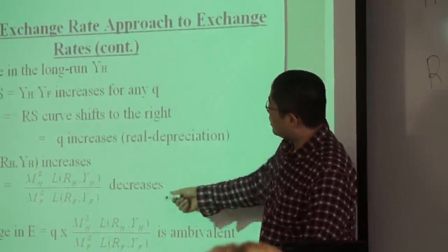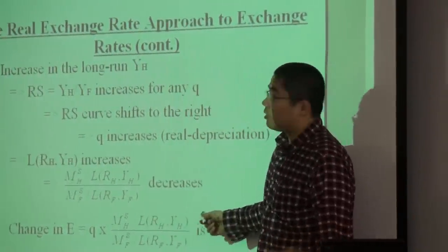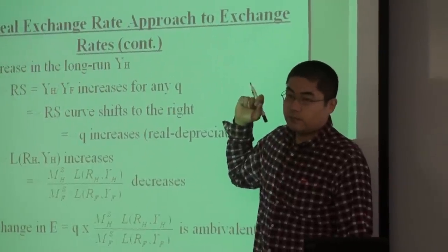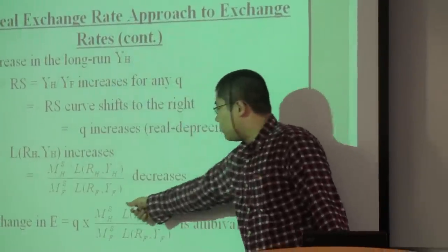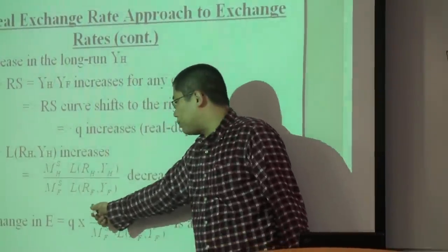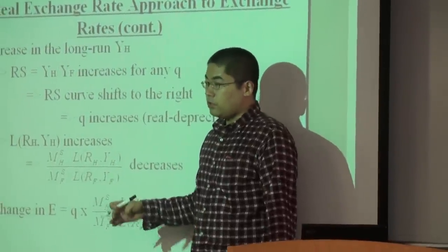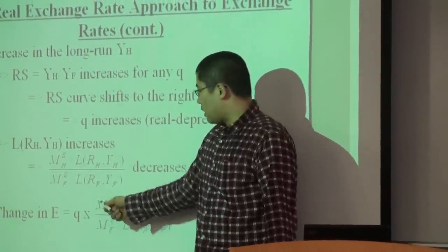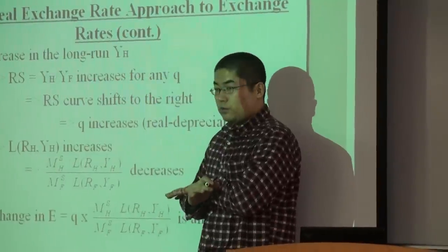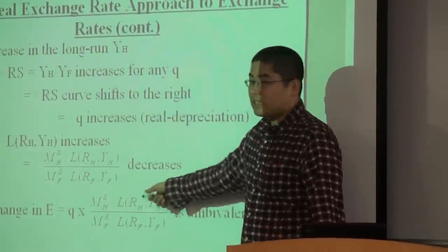Suppose that because of the increase in yh, real money demand increases by 10%. So this part increases by 10%. But if central bank increases money supply by 10% too, 10% increase, 10% increase, they cancel out. So no change in monetary side.